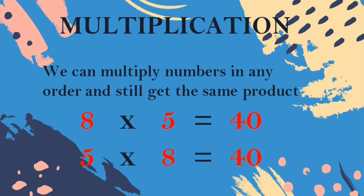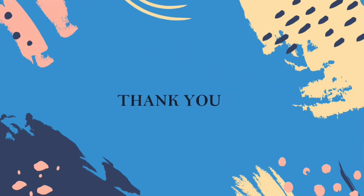We can multiply numbers in any order and still get the same product. 8 5s are also 40. 5 8s are also 40. Any order you change the numbers, the product is the same. 8 5s are 40, 5 8s are 40. The order is changed but the product answer is same. All of them understood, children. Thank you children.